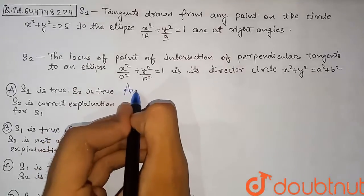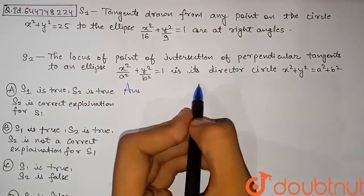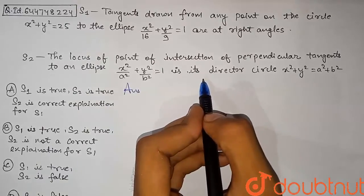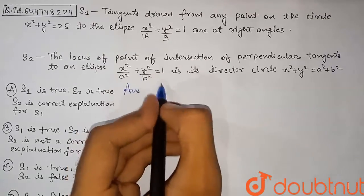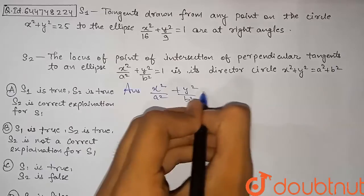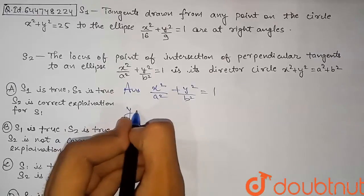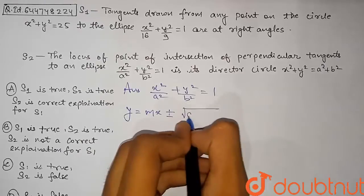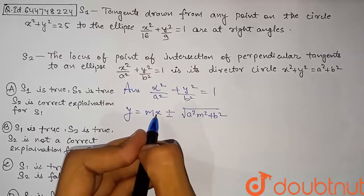Let's begin with the solution. We will use the slope form of the tangent equation to prove this result — specifically, we will find the locus of the point of intersection of perpendicular tangents. For the ellipse x²/a² + y²/b² = 1, the general equation of a tangent in slope form is given by: y = mx ± √(a²m² + b²).